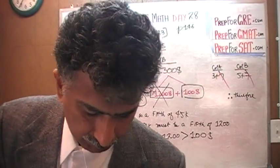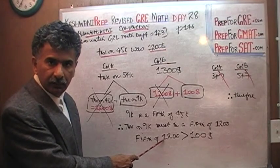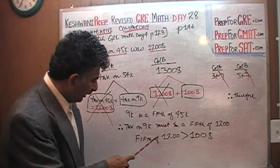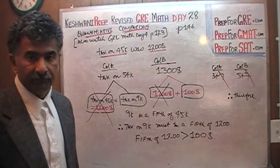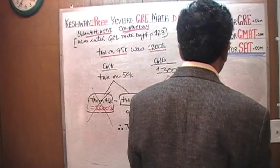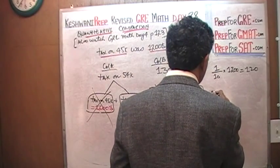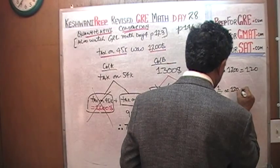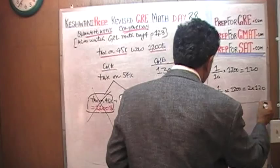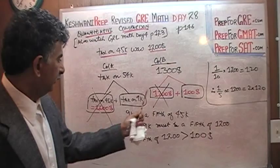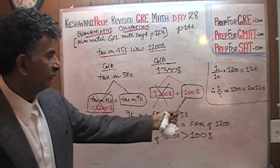A tenth of $1,200 is $120. Therefore, a fifth of $1,200 must equal 2 times 120 — because a fifth is twice a tenth. Therefore, a fifth of $1,200 is 240, which is more than $100. Therefore, the tax on $9,000 is a fifth of the tax on $45,000, which is a fifth of $1,200. And a fifth of $1,200 is more than $100. Therefore, the answer is A.